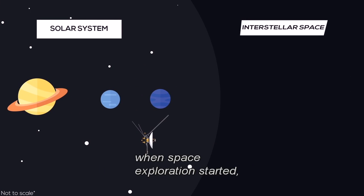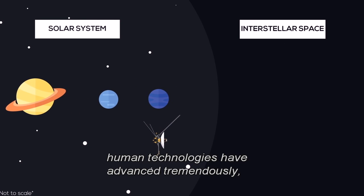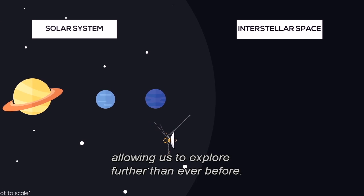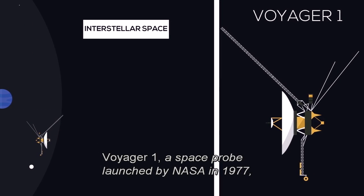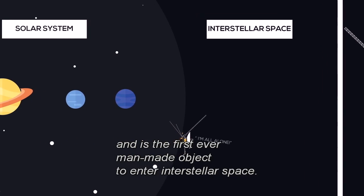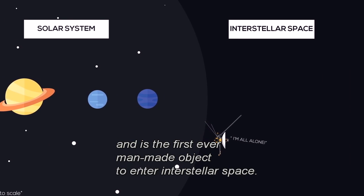Since the late 1950s, when space exploration started, human technology has advanced tremendously, allowing us to explore further than ever before. Voyager 1, a space probe launched by NASA in 1977, has now left our solar system and is the first ever man-made object to enter interstellar space.